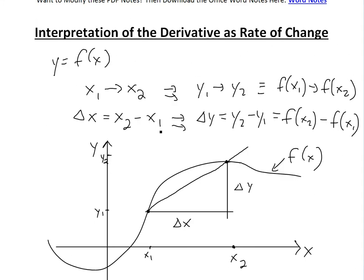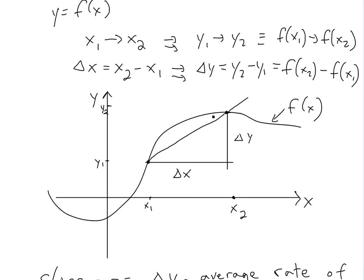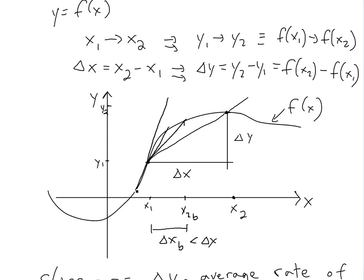Now if you look at the instantaneous rate of change, that's where we get to the derivative. Let's say we make delta x smaller, moving to a closer x2 — let's call it x2b. That slope is a bit higher. If you draw even closer, you get an even smaller delta x. As you go all the way instantaneously — as delta x approaches zero — you get the instantaneous slope, which is the derivative, f prime of x. You can see the definition of derivative in the video link below.